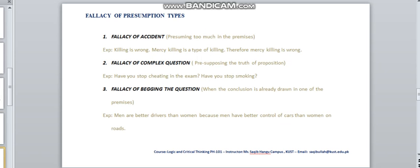The first one is Fallacy of Accident. In Fallacy of Accident, when a person is presuming too much in the premises, that is called Fallacy of Accident. For example, killing is wrong. Mercy killing is a type of killing. Therefore, mercy killing is wrong. If you see that killing is something else, while mercy killing is a different case. Here, mercy killing has been counted in the category of killing, which is a very specific scenario or a very specific case.